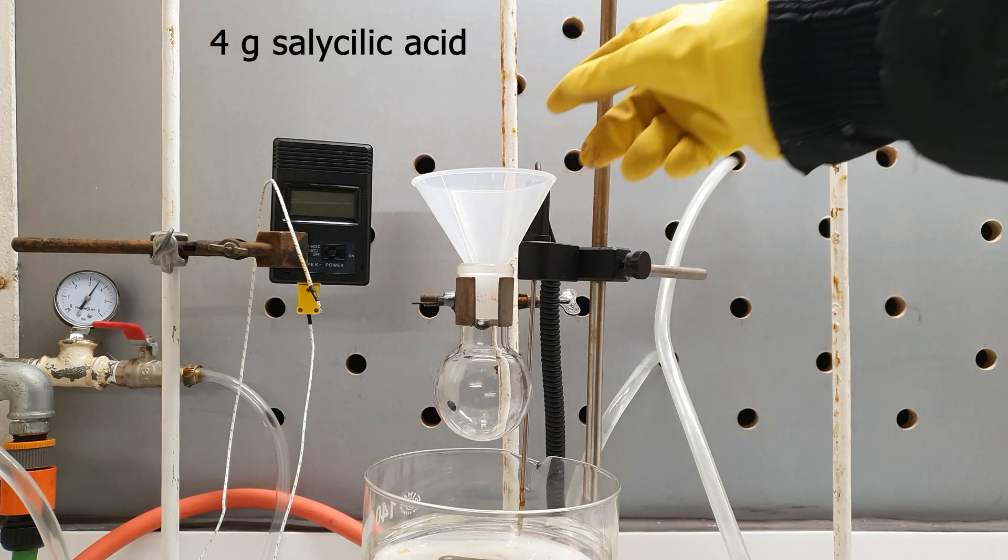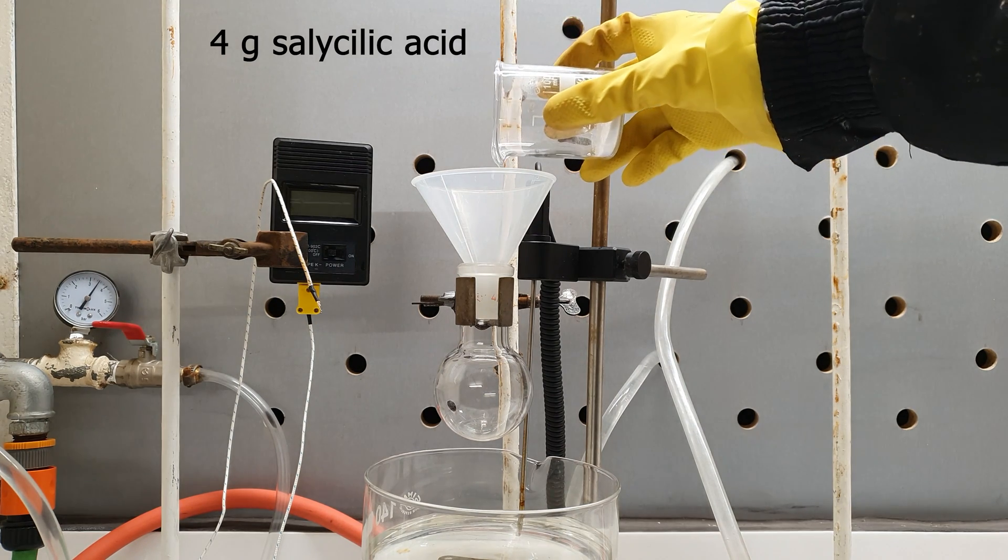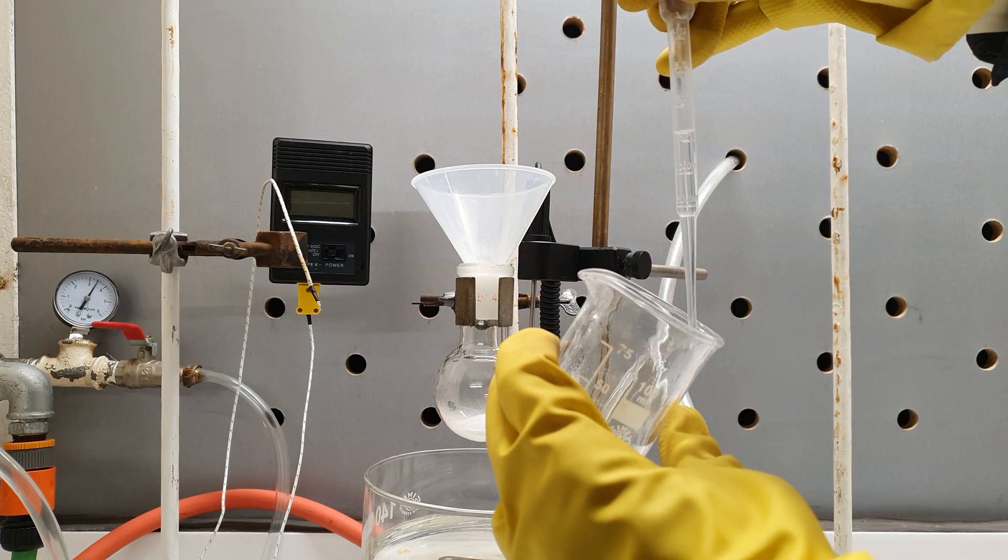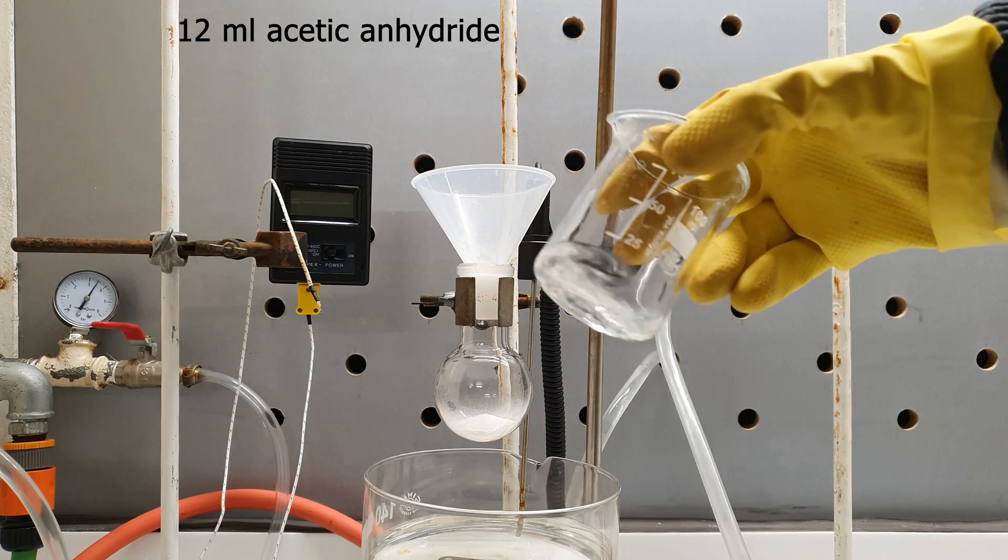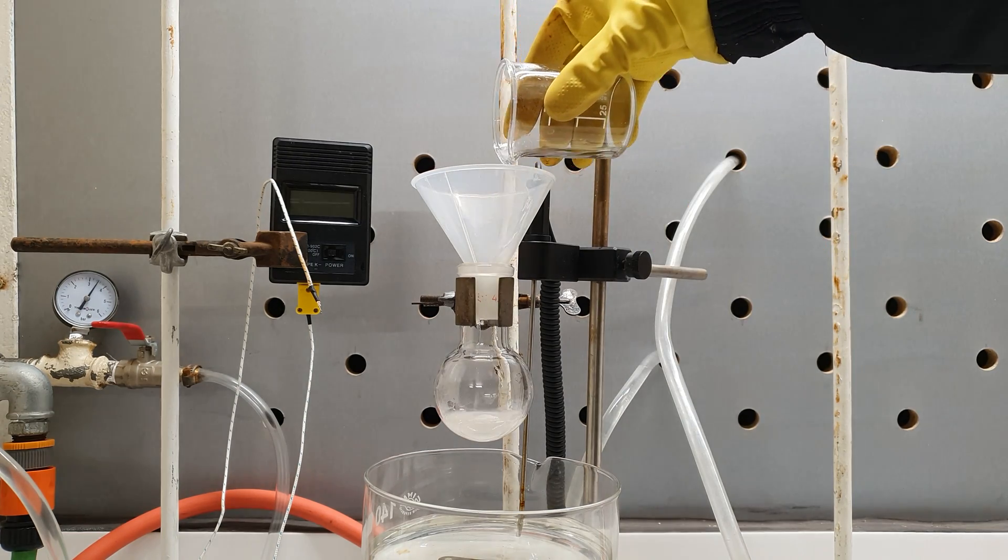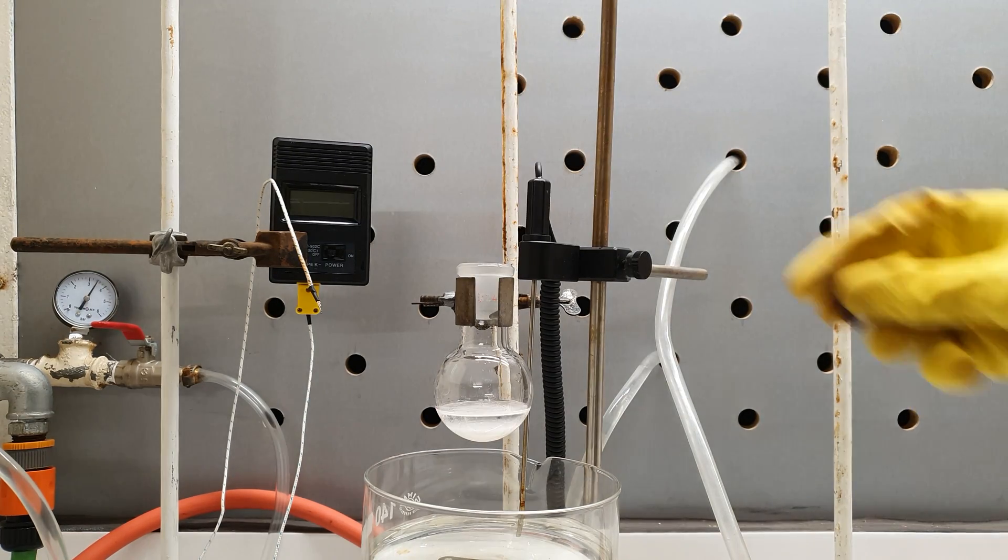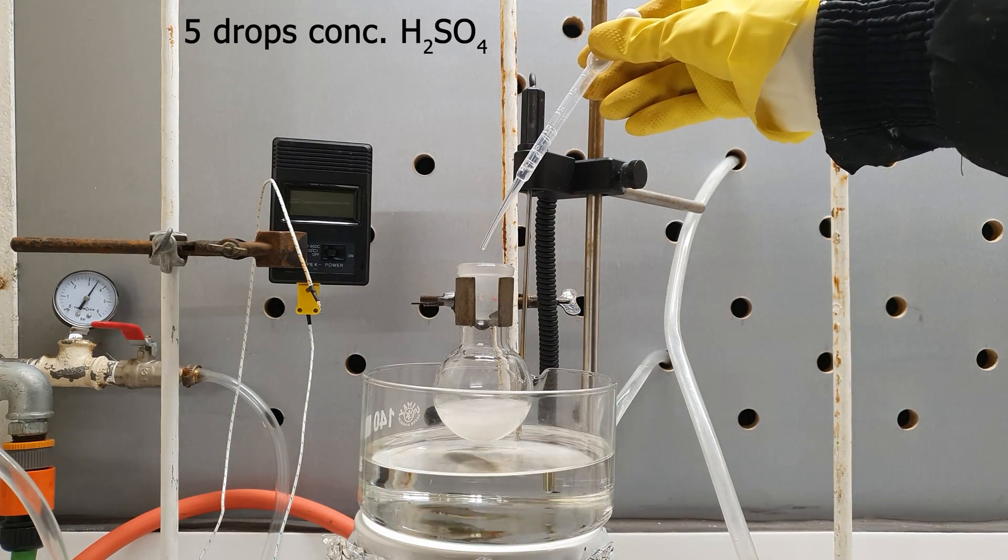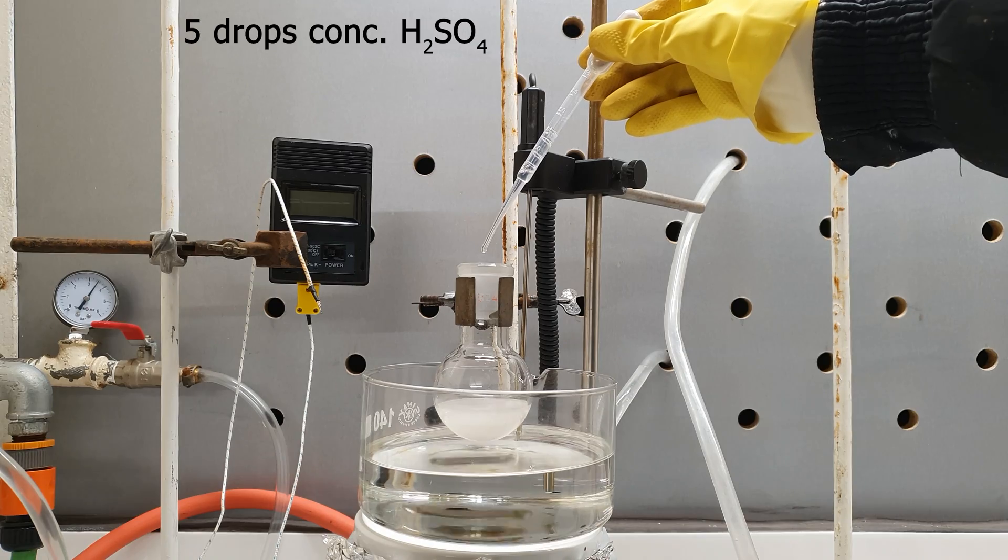I added 4 grams of the salicylic acid to a 100ml round bottom flask. This was followed by 12ml of acetic anhydride which I used to wash the beaker and the funnel from any remaining acid. Then I added a stir bar and under vigorous stirring I added 5 drops of concentrated sulfuric acid.